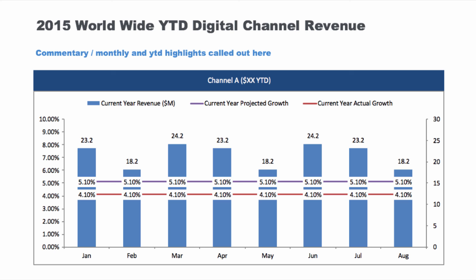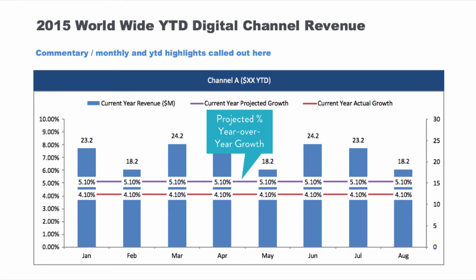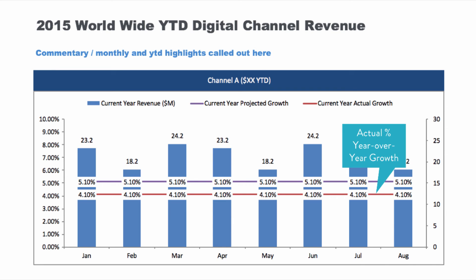This is just one of the modules — I chose Channel A as an example. Keep in mind this is extremely simplified data and I'll show you how I had to change that for this exercise. At the top: worldwide year-to-date digital channel revenue for Channel A, with some highlights underneath. The bars represent current monthly revenue. The purple line is the projected percent year-over-year growth — a one-time flat annual target set against the prior year.